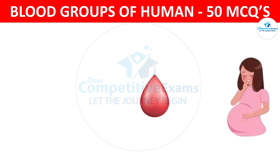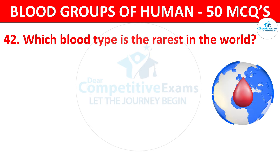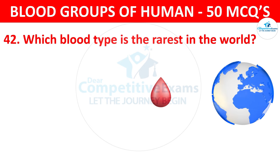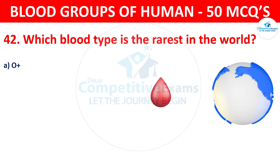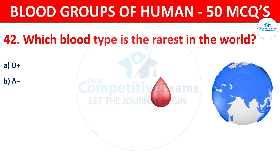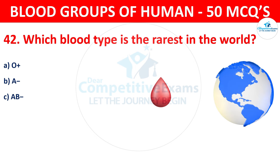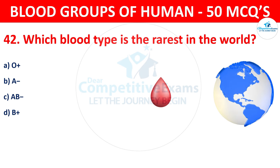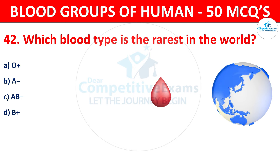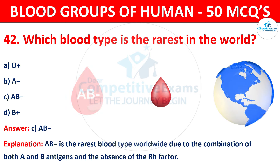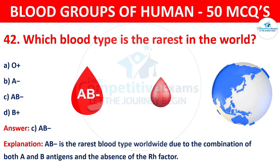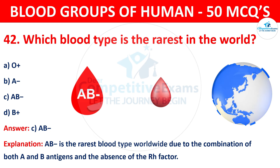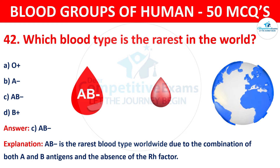Question 42: Which blood type is rarest in the world? The correct answer is C, AB negative. AB negative is the rarest blood type worldwide due to the combination of both A and B antigens and the absence of the RH factor.